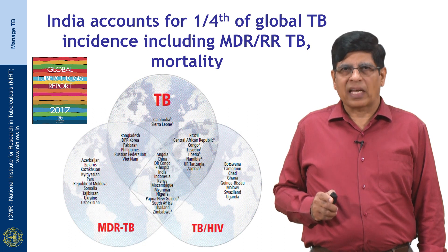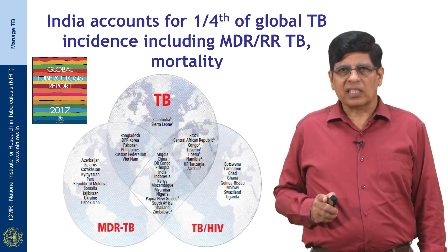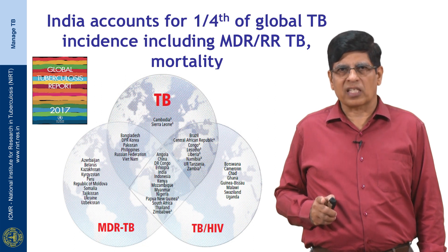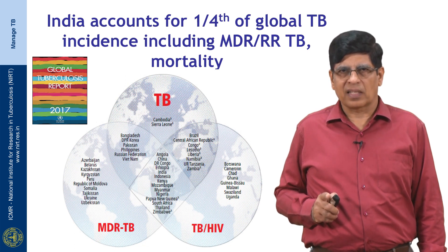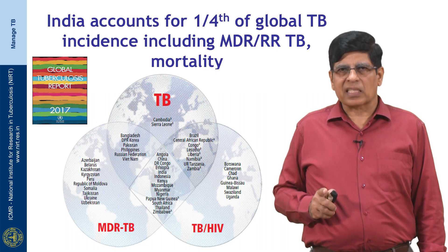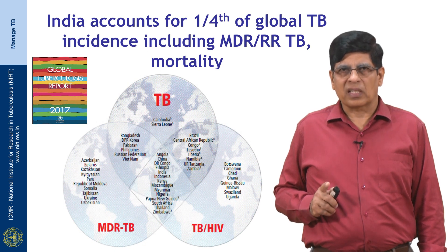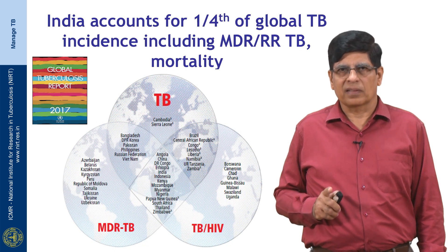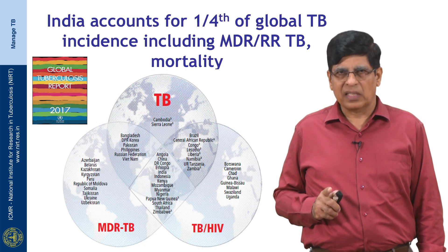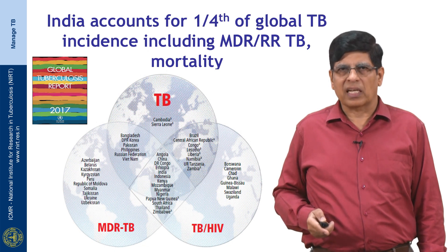India is included in all three high-burden lists: overall TB, HIV-associated TB, and drug-resistant TB. Each of these lists contains 30 high-burden countries, and India is included in all three. Overall, India contributes about 25% of TB burden in terms of incidence as well as mortality for all three types of TB.